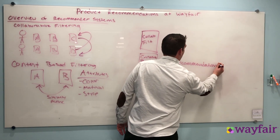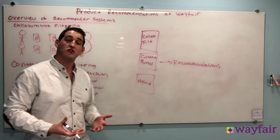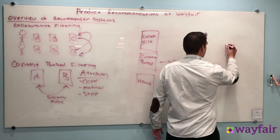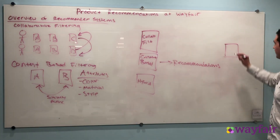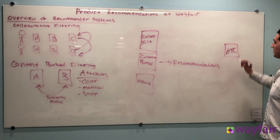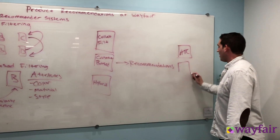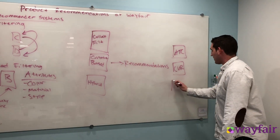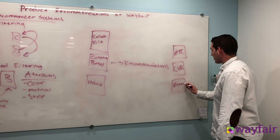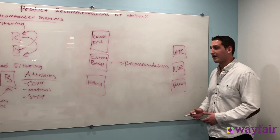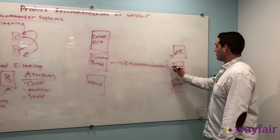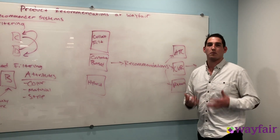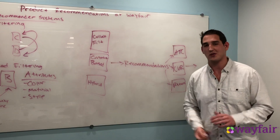Once we have these recommendations, the question becomes how do we actually order these things on a page for a given user? What we'll typically do is model business objectives — so looking at things like add-to-cart rate, or how often people are adding to cart from the page, conversion rate, or how often people are ordering these products, or things like minimizing the return rate to make sure that customers are actually happy with the products that they buy. We pass these recommendations into each one of these models to get an ordered, personalized experience that we end up showing to those users.